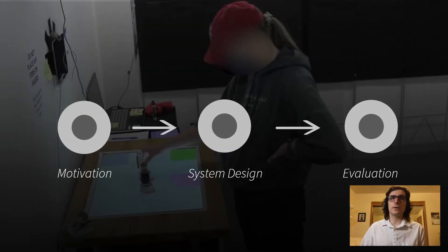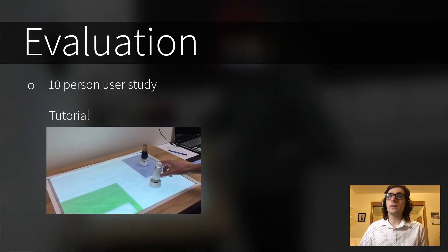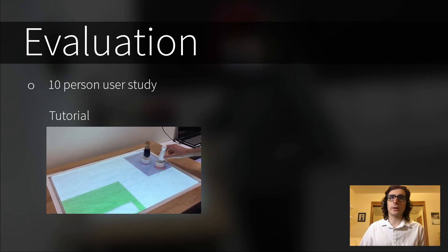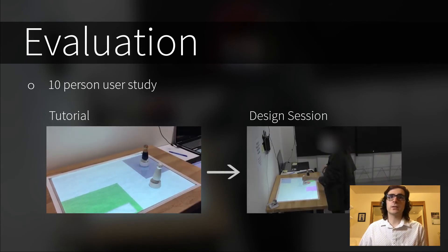After we designed Figaro, we evaluated it with a 10-person validation study. In this evaluation, each participant was guided through a tutorial about how to use Figaro. Then, they were asked to design a human-robot interaction at a museum, in which a museum-guide robot answers people's questions and guides people to different exhibits.